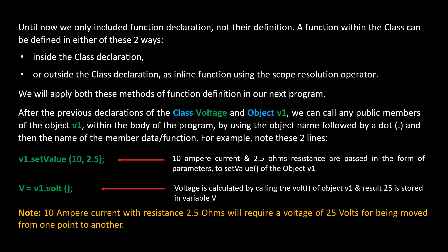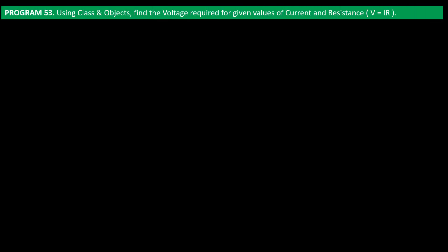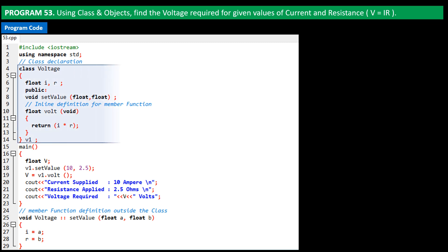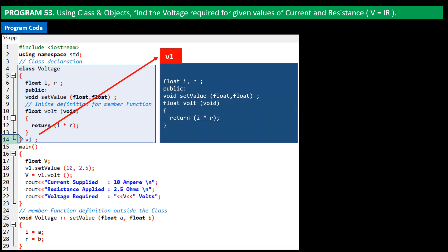Let's apply all that we learned about class and objects in program number 53: using class and objects, find the voltage required for given values of current and resistance. The formula is V = I × R. Here is the class named 'voltage'. At the end of the class declaration on line 14, we declare the object v1, which allocates memory storage space for this object and assigns the reference of the memory address location to v1.